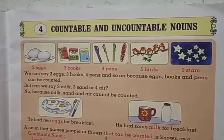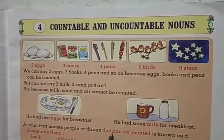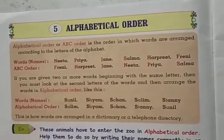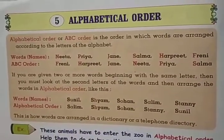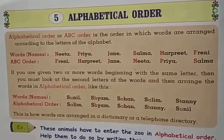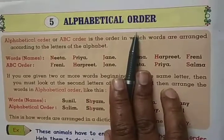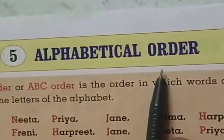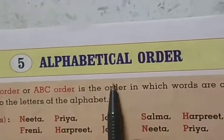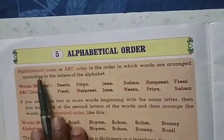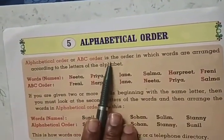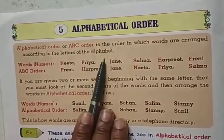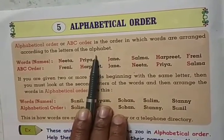Today I am going to start with one simple lesson, that is alphabetical order. Again, I am going to start with alphabetical order. Two simple lessons are there, that's why I took two lessons together. Alphabets means the letters which start from A to Z — they are known as the alphabet. Alphabetical order, or ABC order, is the order in which words are arranged according to the letters of the alphabet.